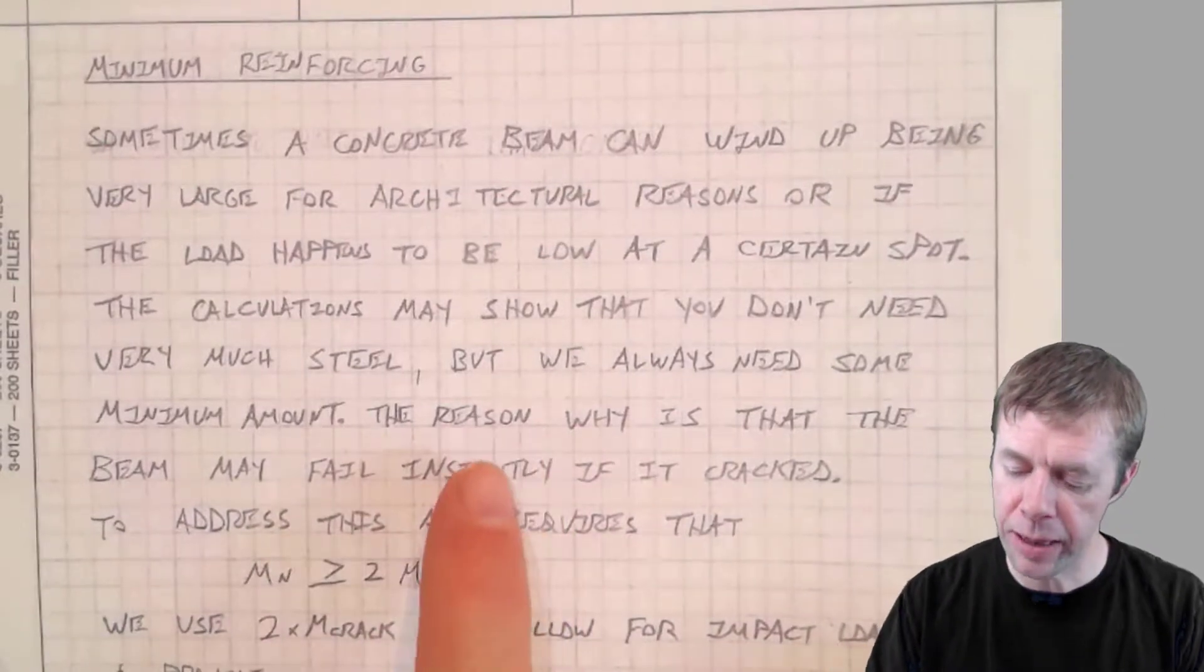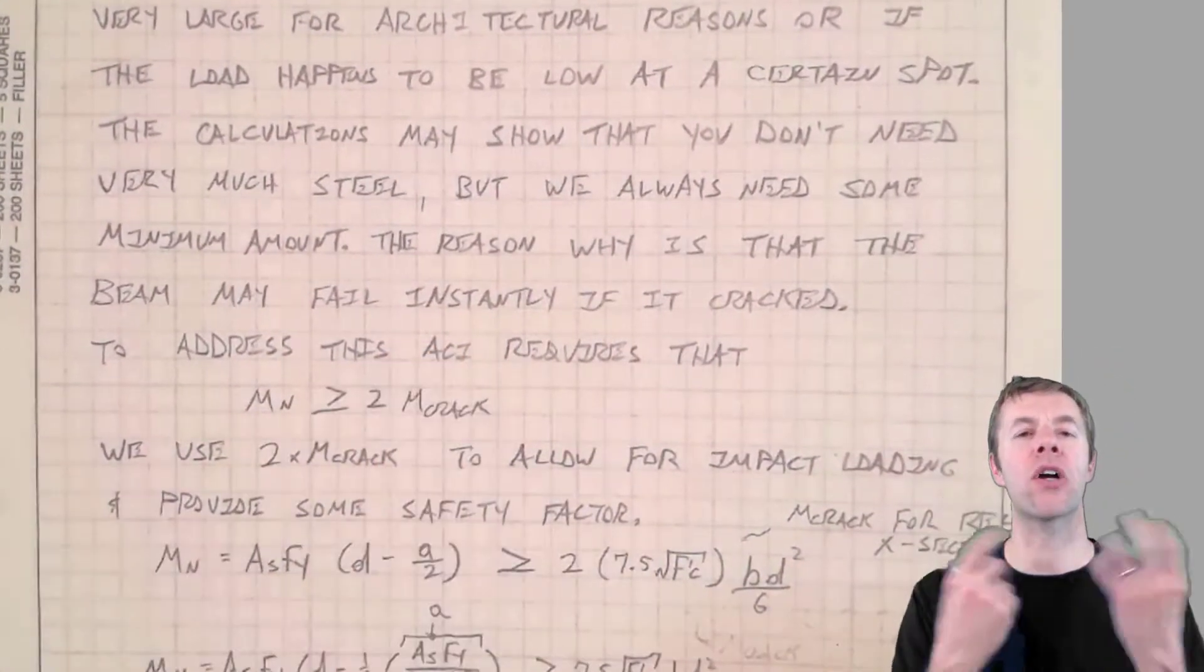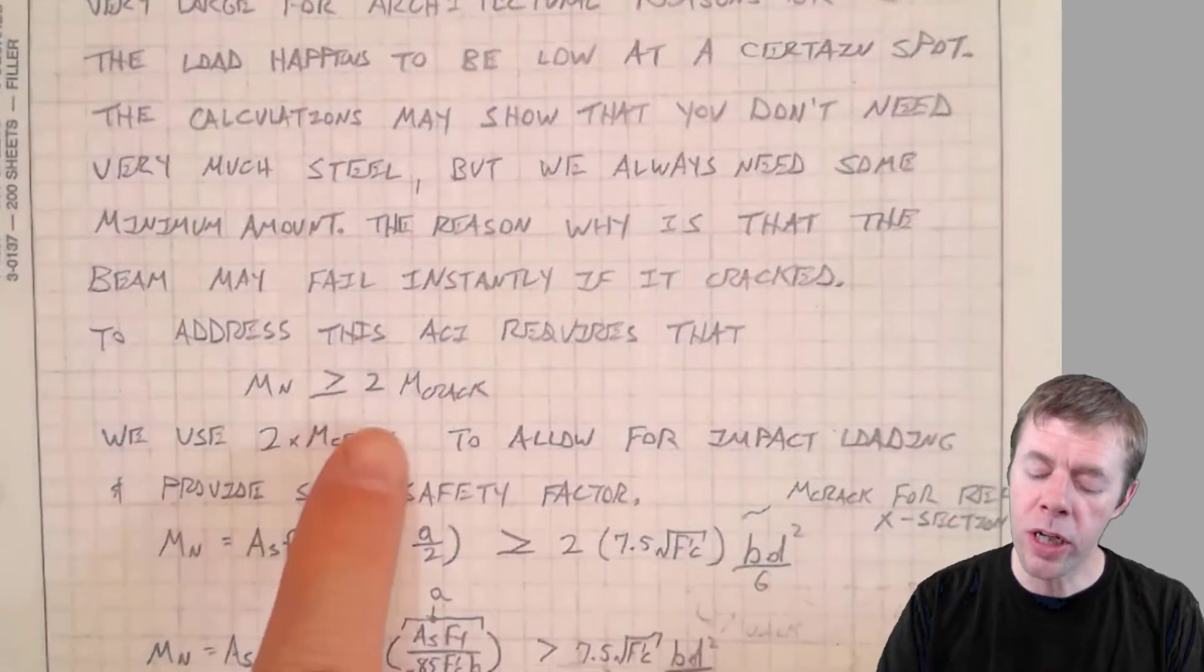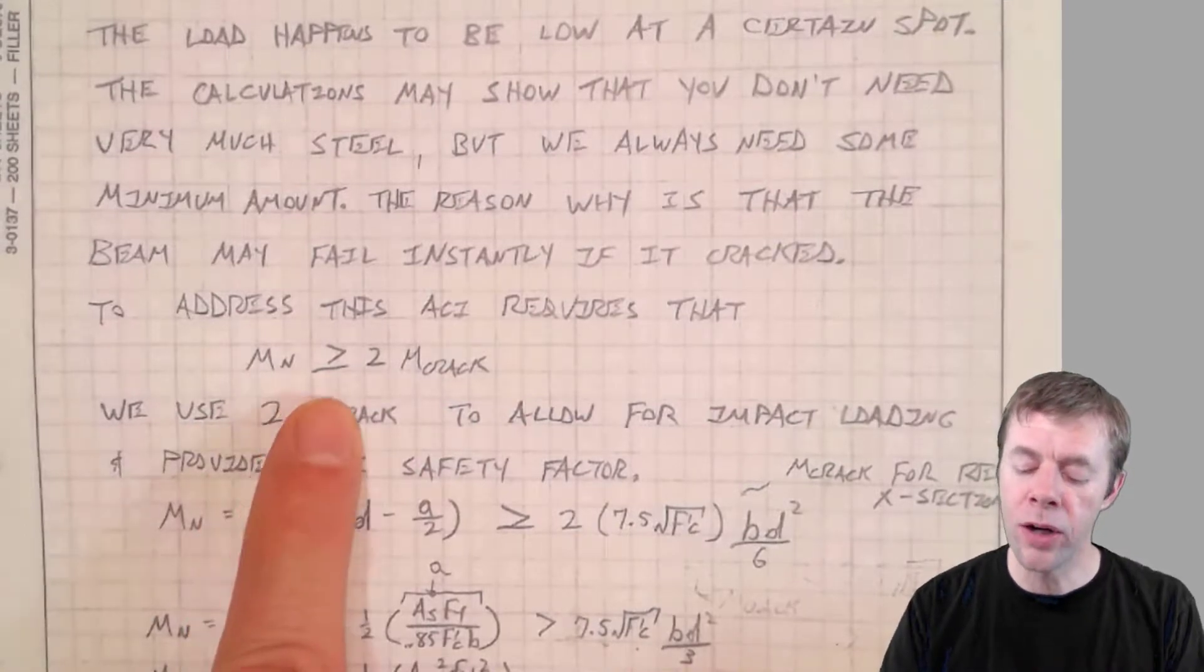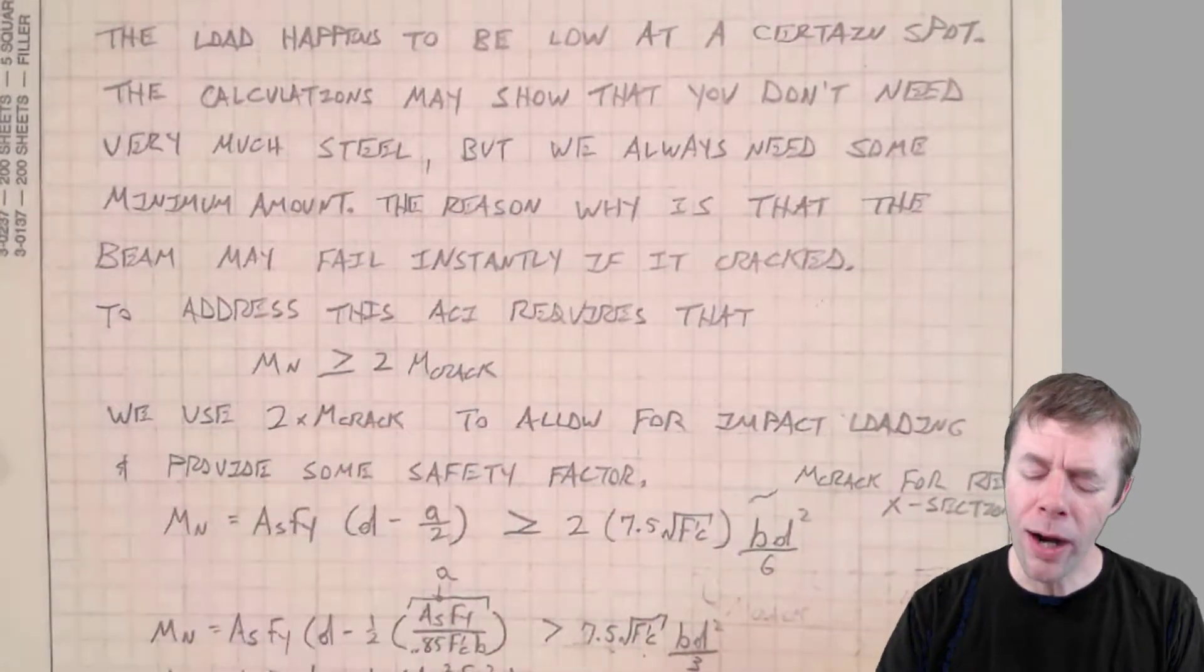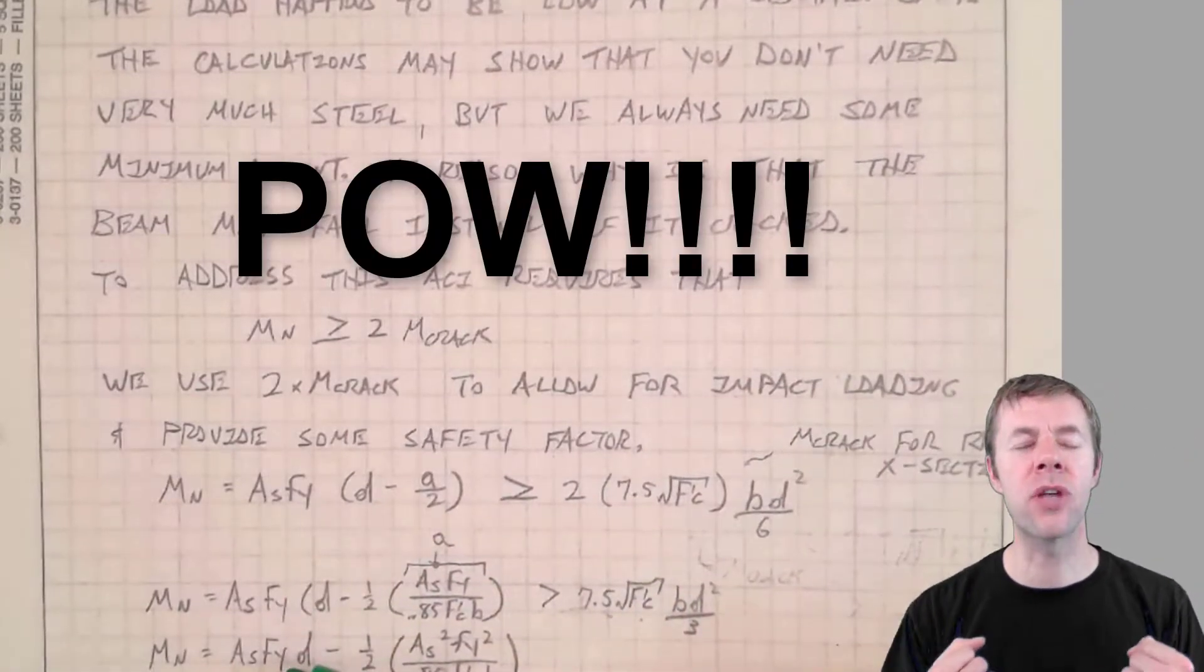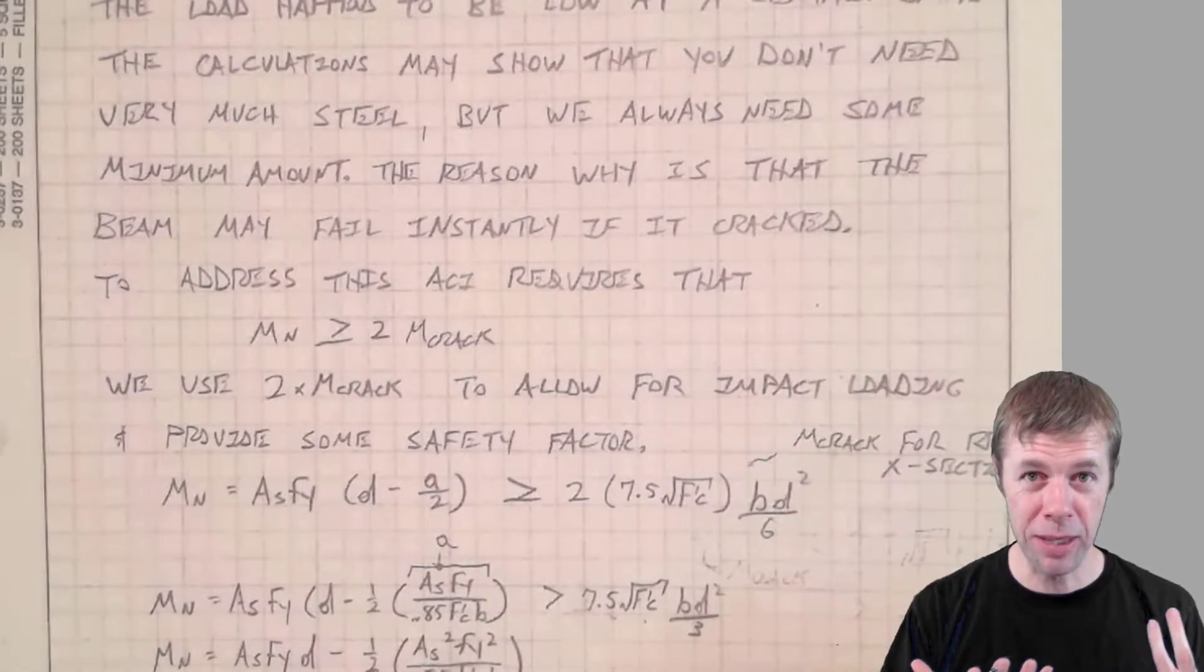So if we have these really big beams, one concern would be that if it instantly cracked, that cracking moment, that cracking load would be so high that it would cause it to fail just like that. And that's not good. So to do that, they said, we're going to make sure that the moment we have in our beam is always greater than or equal to two times the moment at which the beam cracks at.